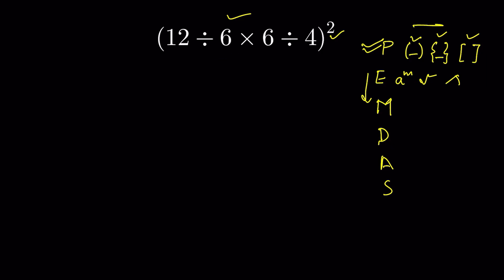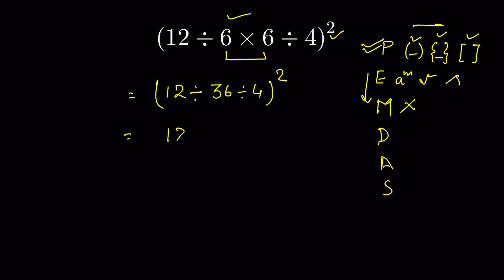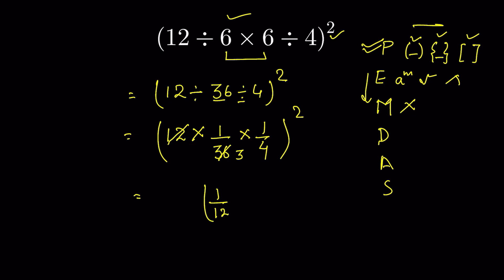Which operation do we do first? Some people follow multiplication first because after exponents we have multiplication in PEMDAS. They multiply 6 times 6 to get 36, giving 12 divided by 36 divided by 4, whole to the power of 2. Division then gets converted into multiplication, the number after gets inverted, so it becomes 12 times 1/36 times 1/4, whole to the power of 2. Cross-cancelling, 12 over 3 is 36, giving 1/12 to the power of 2, which equals 1/144.